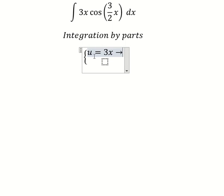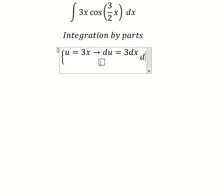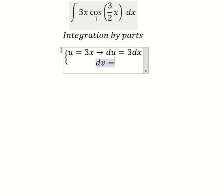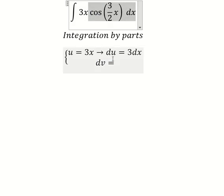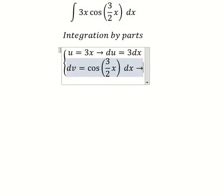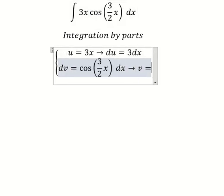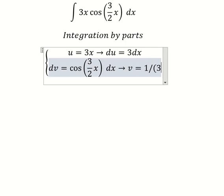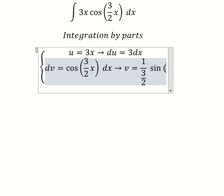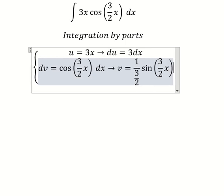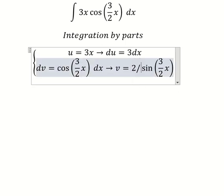Next we need to take the derivative on both sides. For dv, the integral of cos(3/2 x) gives us 1 over 3/2 sine of 3/2 x, which simplifies to v equals 2/3 sine of 3/2 x.